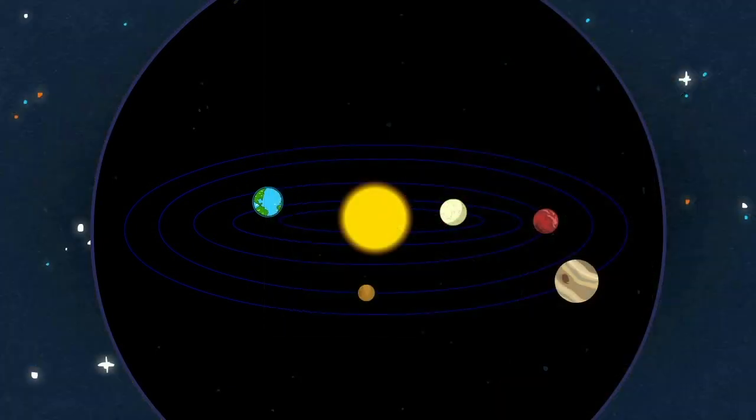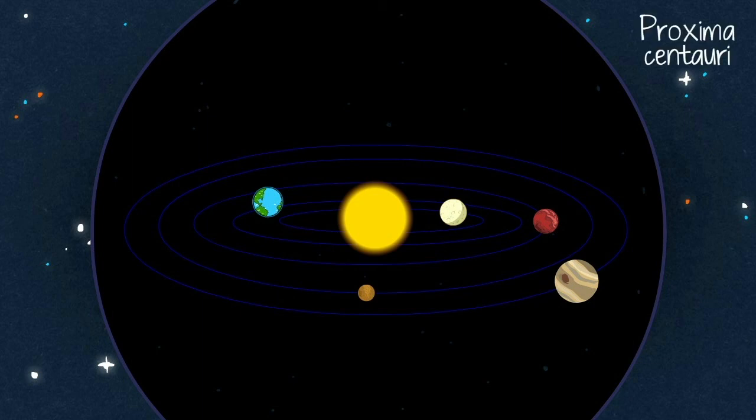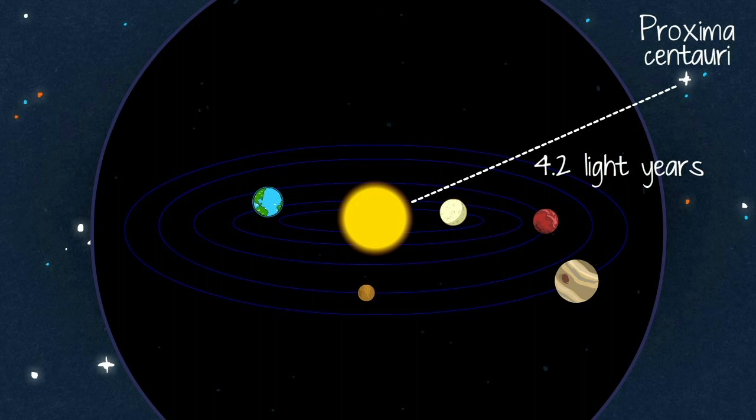Nowadays, we know that the closest star to the sun, Proxima Centauri, is much further than that. 4.2 light-years.